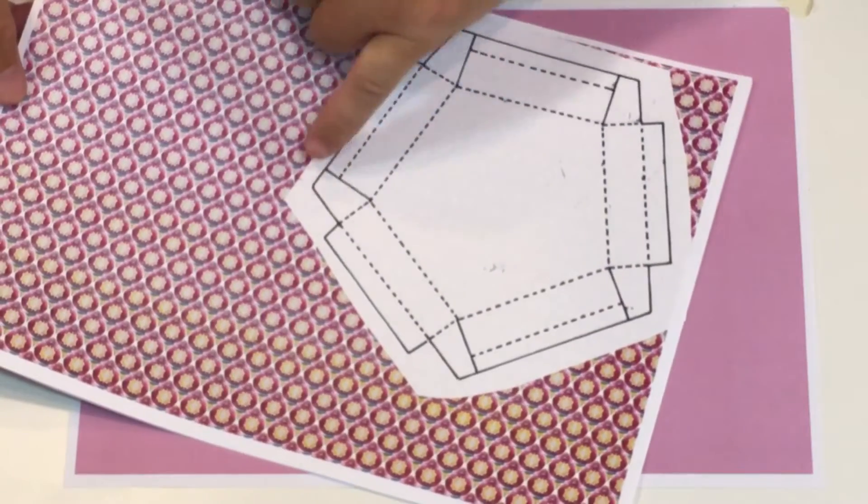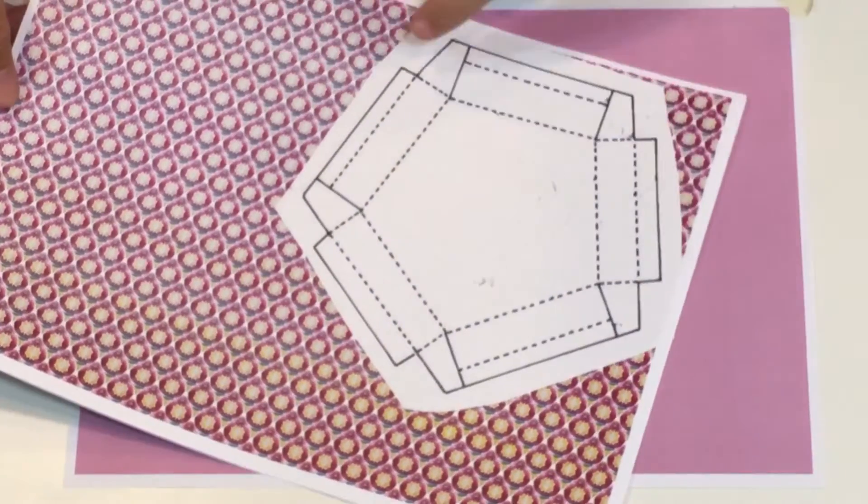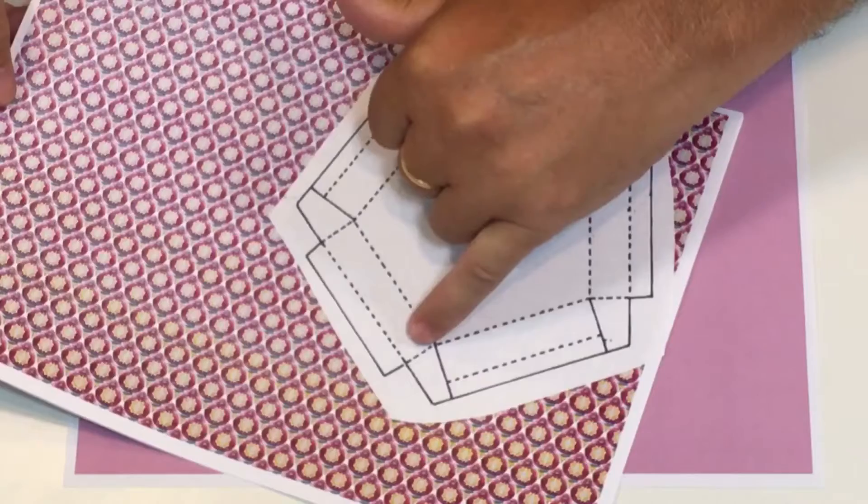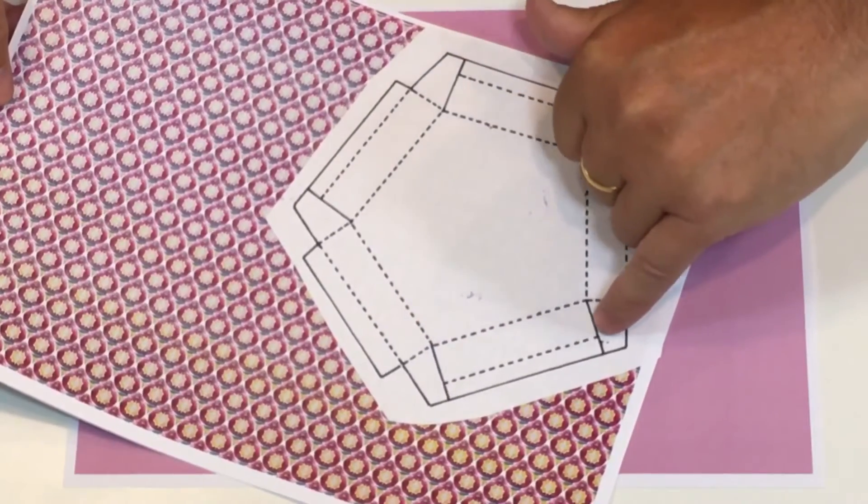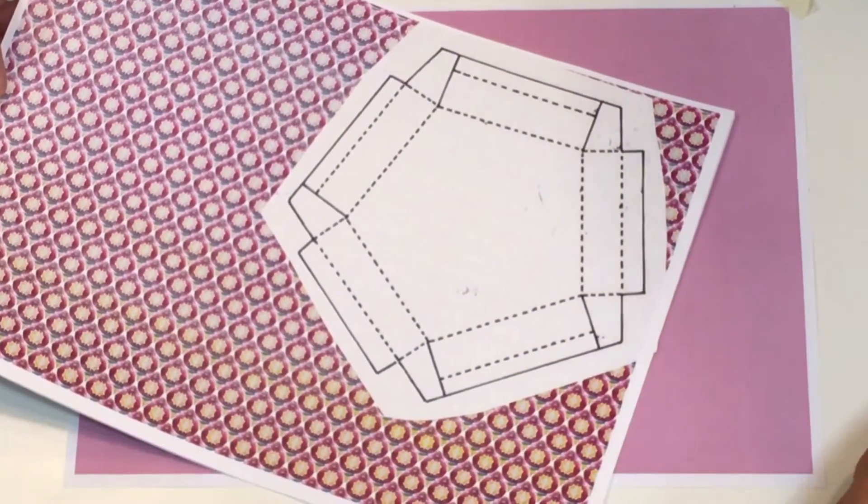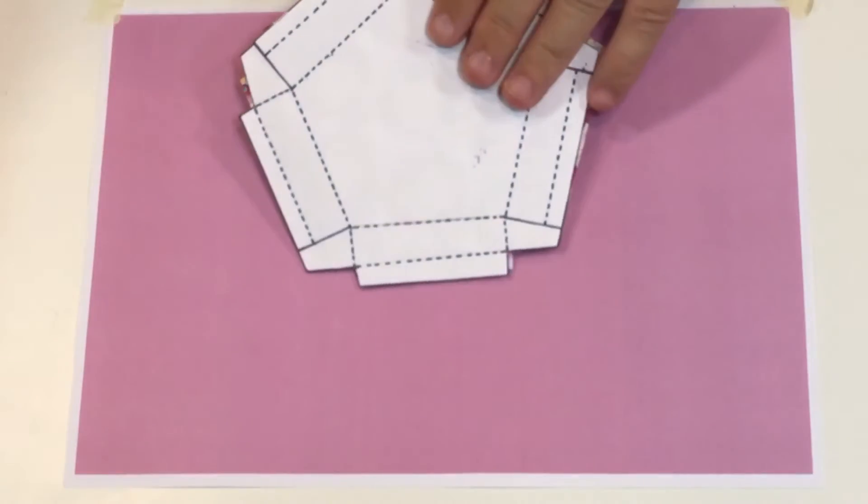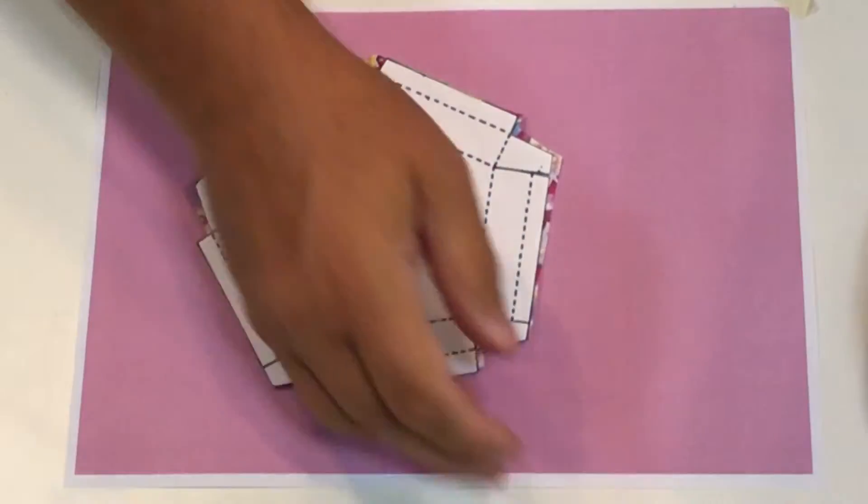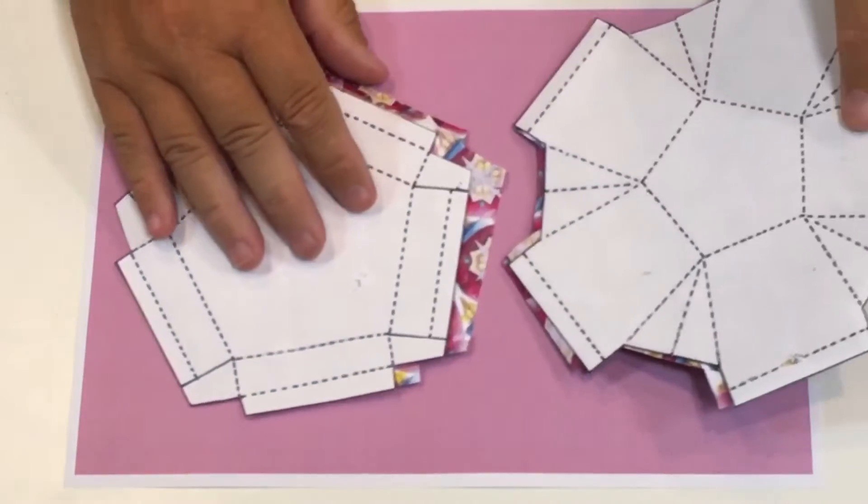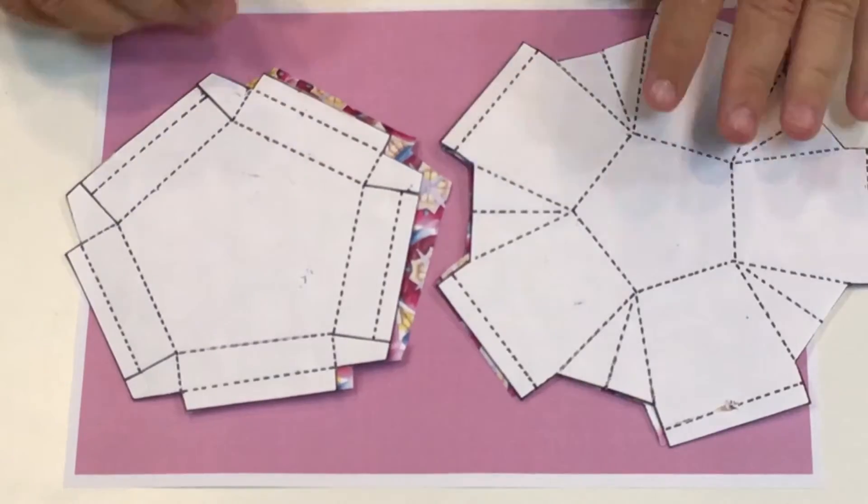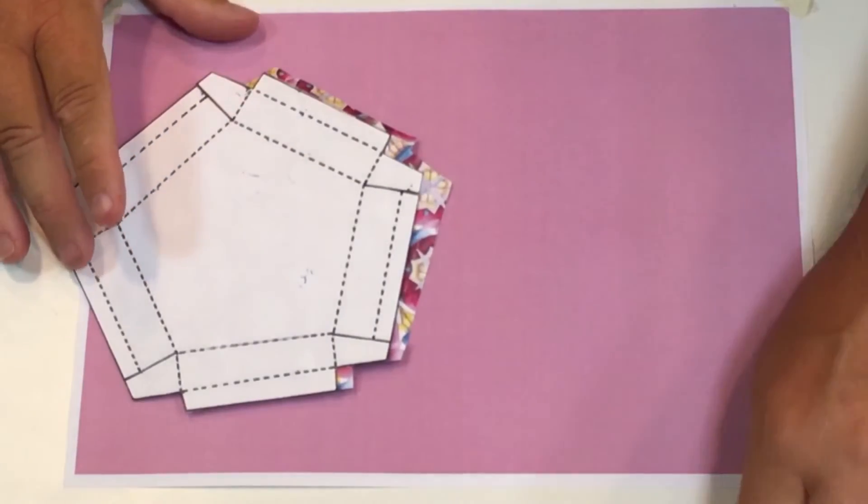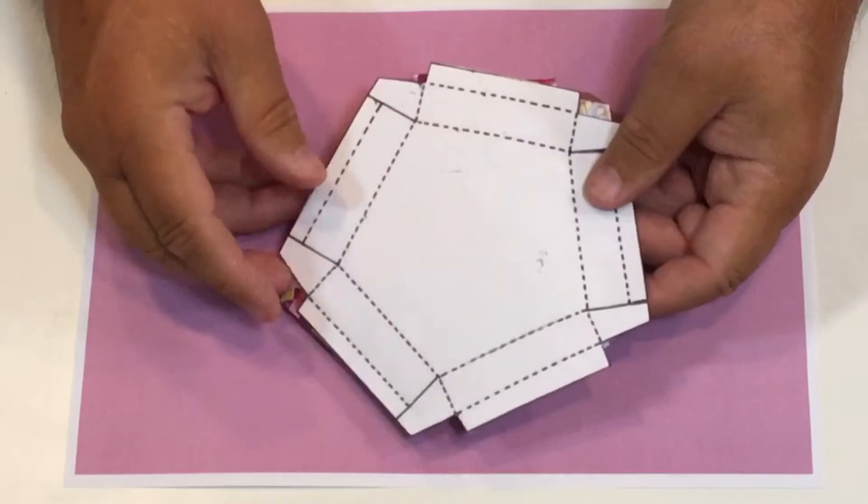And then you cut it all out where all the straight lines are. Don't forget to go across here. Pay attention when you're cutting out because some have got dotted lines and some are straight lines. So when you've cut it out, you end up with this. Now you're doing that to both the base and the top.